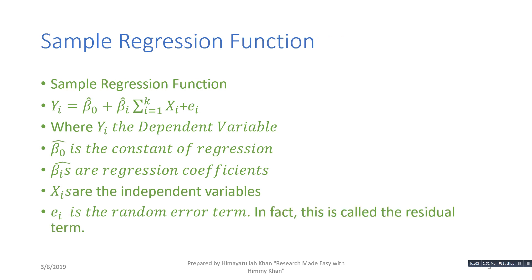Contrary to the population regression function, there is a sample regression function, and there is a little bit of difference between the two. The sample regression function is given here in this slide, and it is equal to: y_i is equal to β₀-hat plus β_i-hat, where summation of i varies from 1 to k, times x_i, plus e_i.